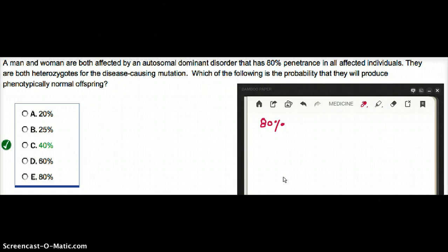In this question, a man and a woman are both affected by an autosomal dominant disorder that has 80% penetrance in all affected individuals. They are both heterozygotes for the disease-causing mutation.